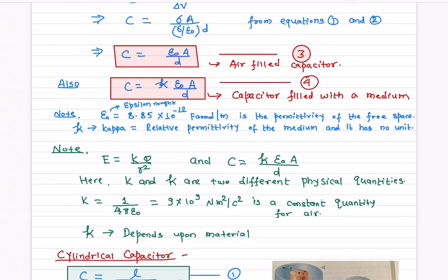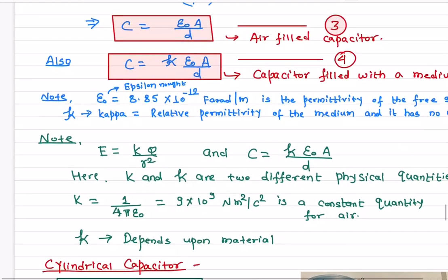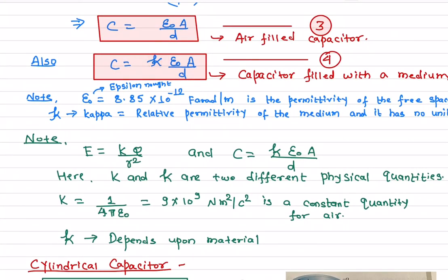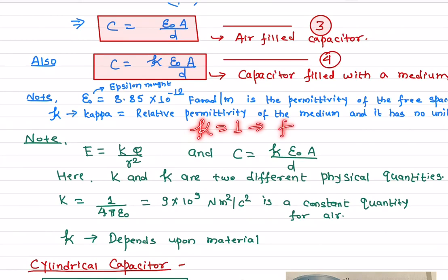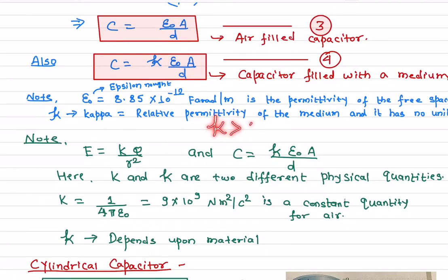Epsilon naught is a constant with a value of 8.85 times 10 to the negative 12 farads per meter, which is the permittivity of free space. The value of kappa is always greater than or equal to one. Kappa equals one for air or vacuum, and for any other medium kappa is always greater than one.